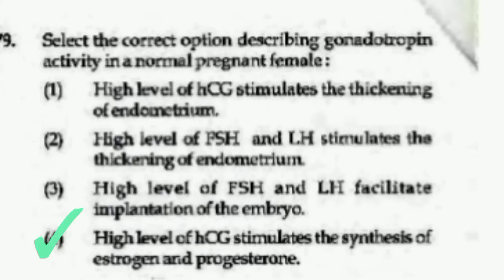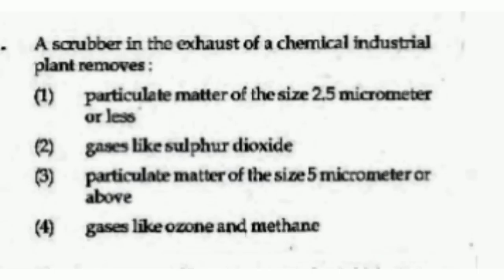A scrubber in the exhaust of a chemical industrial plant removes — options are: particulate matter of size 2.5 micrometers or less; gases like sulfur dioxide; particulate matter of size 5 micrometers or above; or gases like ozone. The right answer is option number 2, Gases like sulfur dioxide.